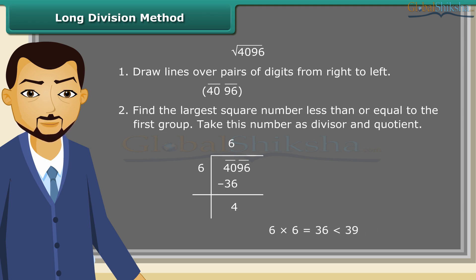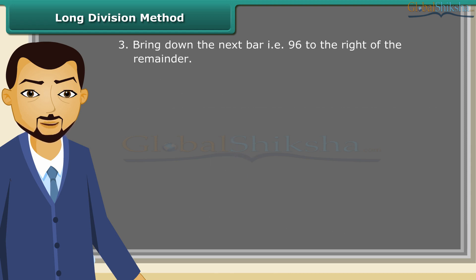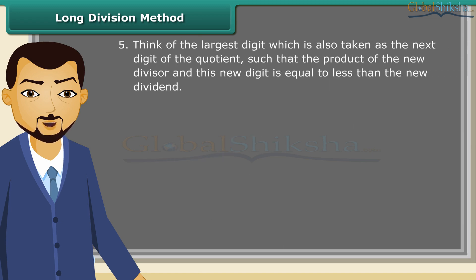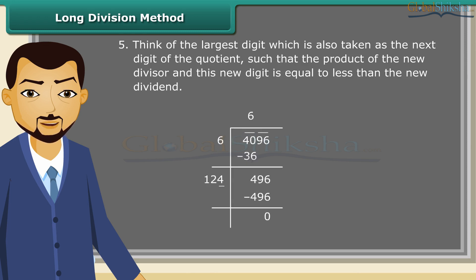After that, bring down the next bar, that is 96, to the right of the remainder. Now, double the divisor. Next, think of the largest digit, which is also taken as the next digit of the quotient, such that the product of the new divisor and this new digit is equal to less than the new dividend. Here, we have 124 multiplied by 4 equal to 496. Since the remainder is 0, so the square root of 4096 is 64.